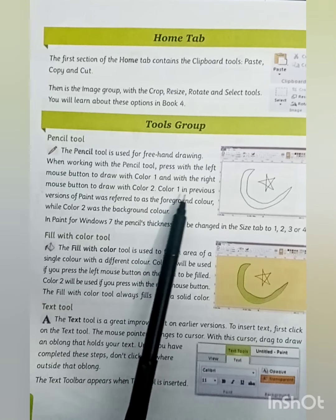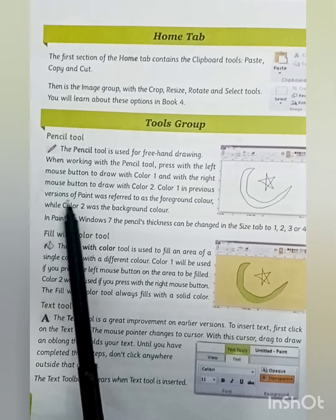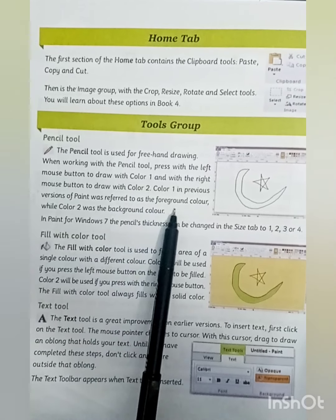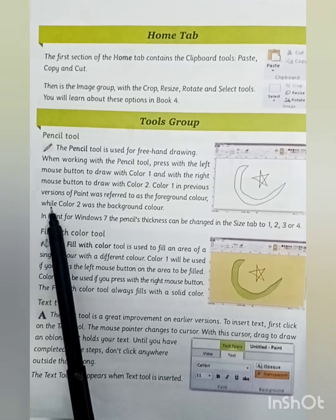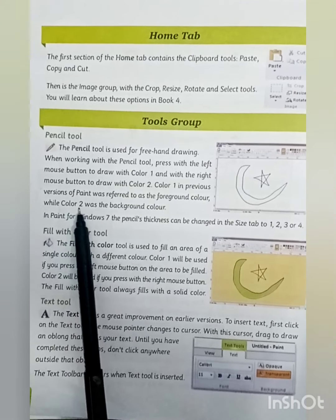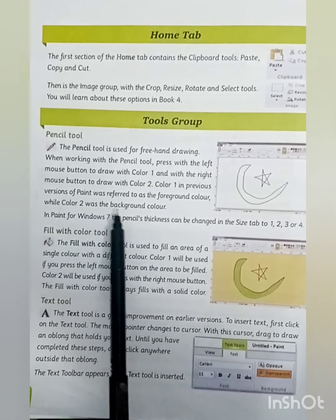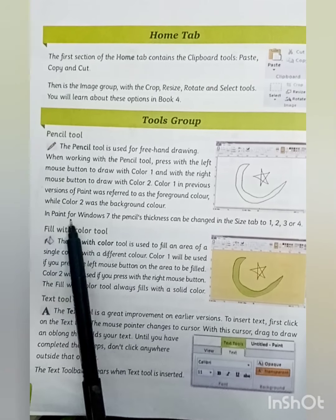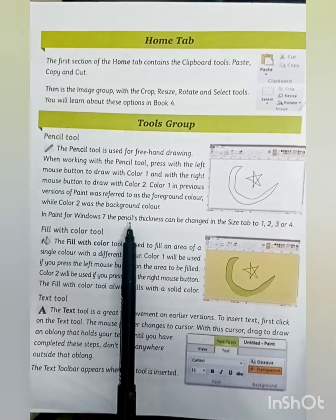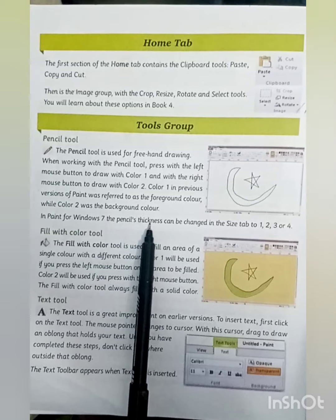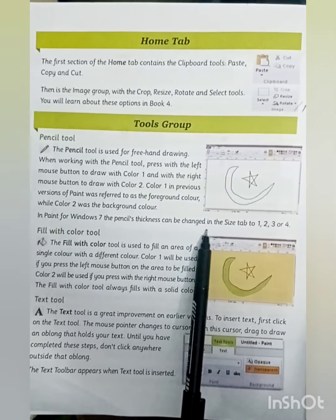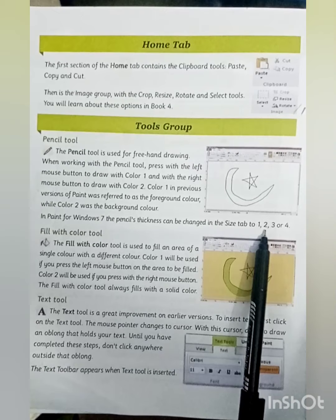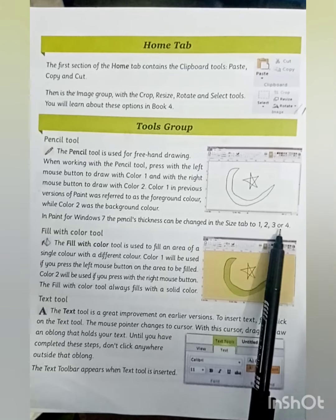Color 1, in previous versions of Paint, was referred to as the foreground color, while Color 2 was the background color. The pencil's thickness can be changed in the Size tab to 1, 2, 3, or 4.